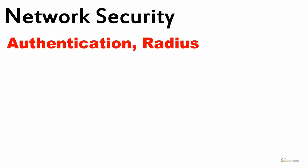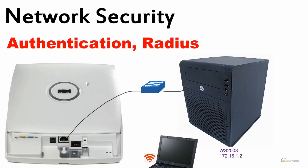Let me show you the topology. The Access Point I'm going to use is, I think, one of the most popular Access Points that Cisco has ever made — the 1131, in my case the AG model. It is connected to a switch, and I have a Windows Server 2008 — to be more specific, it's SBS — with IP address 172.16.1.2.